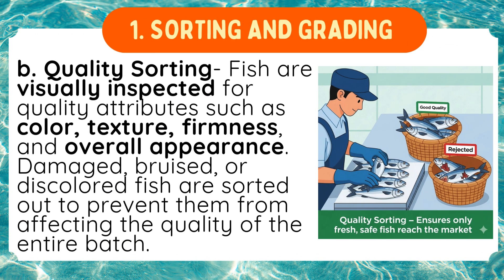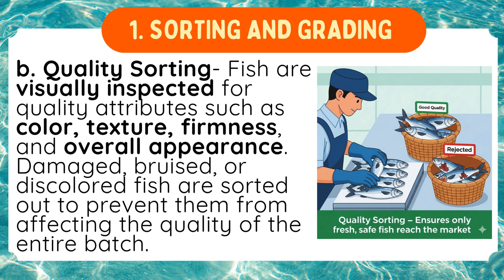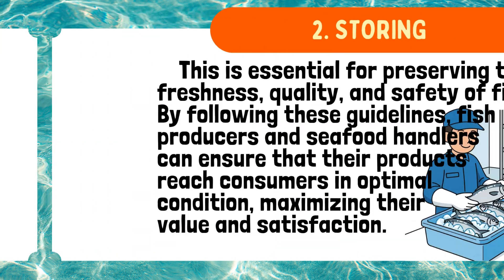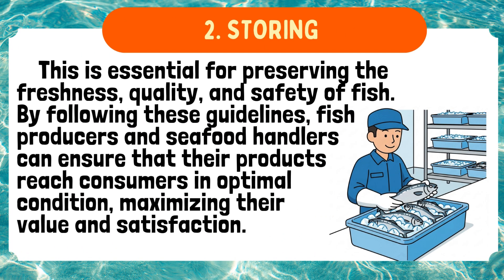B. Quality sorting: Fish are visually inspected for quality attributes such as color, texture, firmness, and overall appearance. Damaged, bruised, or discolored fish are sorted out to prevent them from affecting the quality of the entire batch. 2. Storing: This is essential for preserving the freshness, quality, and safety of fish.